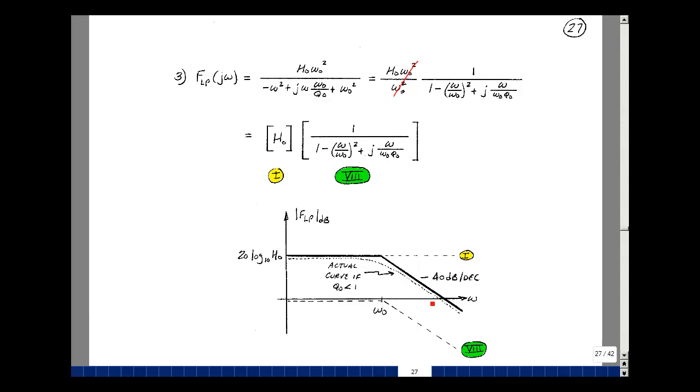Let's sketch in the actual curve, showing a value for Q naught less than 1. So when Q naught is equal, we hug the asymptotes around the break frequency. In all cases, for all values of Q, we hug the asymptotes away from omega naught.